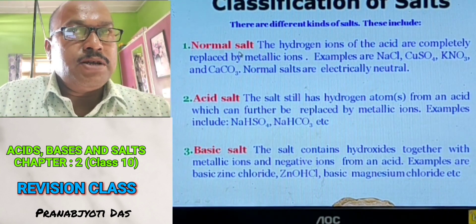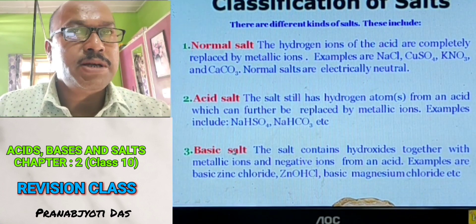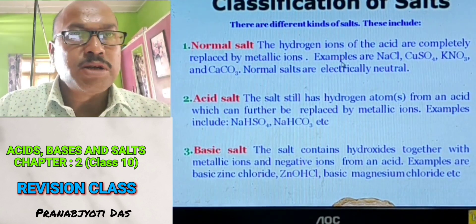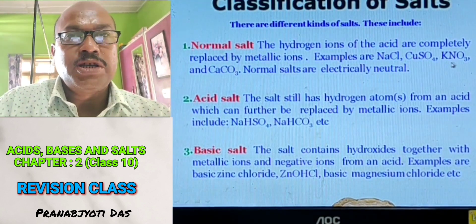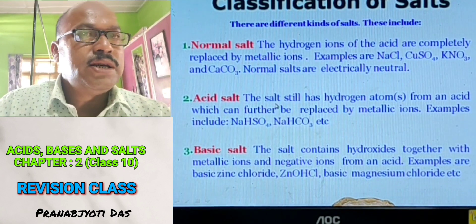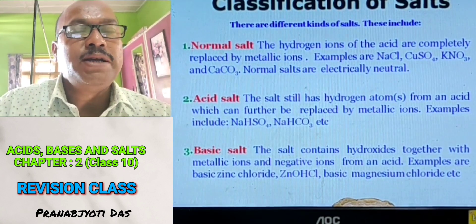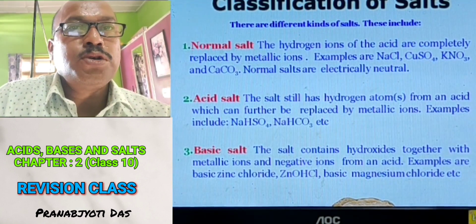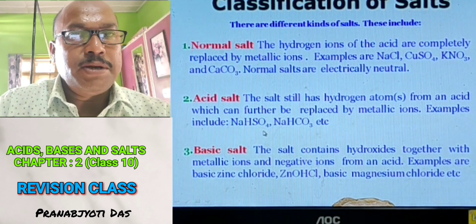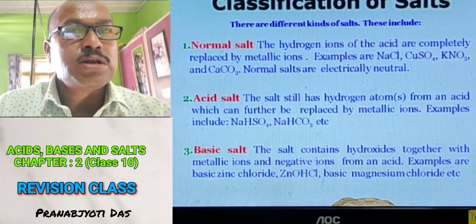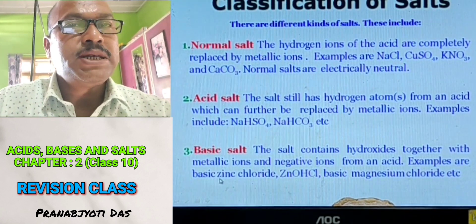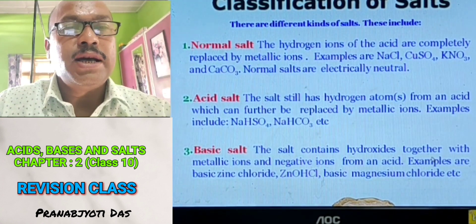Classification of salts — there are three types: Normal salts are produced by the reaction of an acid and base in a neutralization reaction, for example sodium chloride, copper sulfate, potassium nitrate, calcium carbonate. Acid salts are formed by a strong acid and a weak base, and the salt produced has some properties of acid — for example sodium hydrogen sulfate or sodium hydrogen carbonate. Basic salts are produced by a weak acid and a strong base — for example basic zinc chloride (ZnO·HCl).